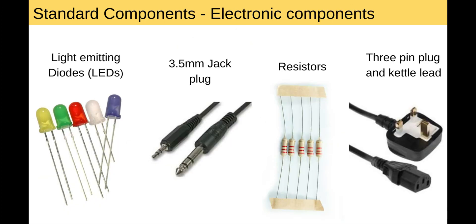Electronic components. Here are some electronic components: light emitting diodes — LEDs — 3.5mm jack plugs, resistors, and a 3-pin plug and kettle lead. These are all electronic components that would be bought in and would not be manufactured in-house.